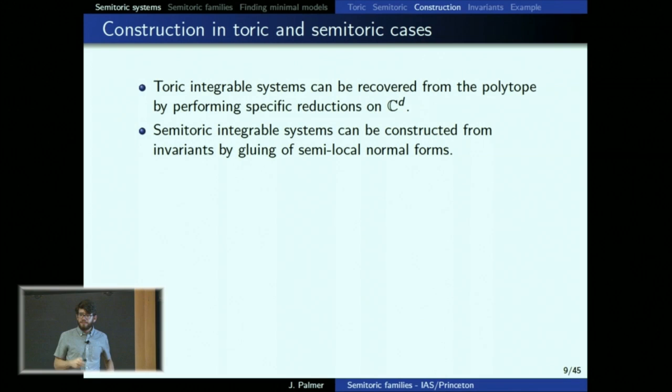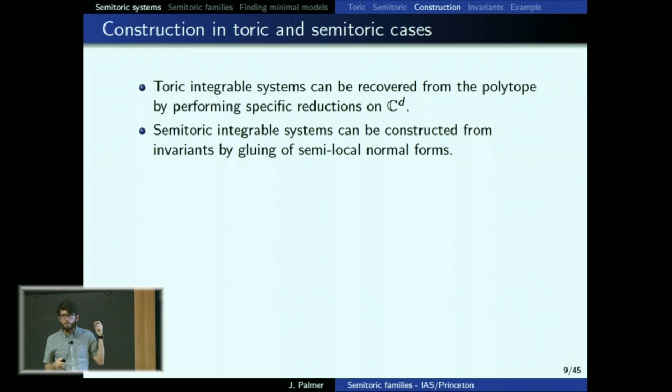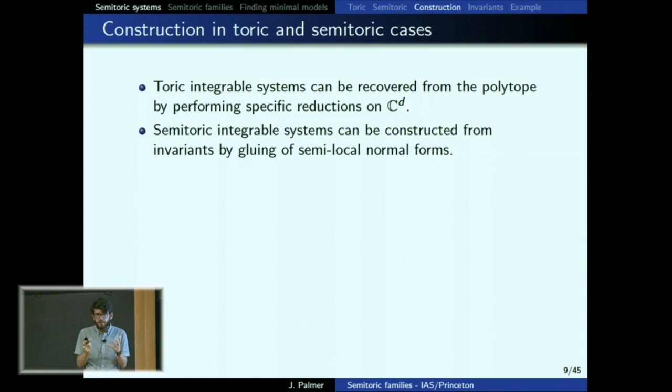Let's compare the toric and semi-toric cases, which leads to the question I'm most interested in for this talk. In the toric case the semi-toric formulation almost recovers it exactly — we have a one-to-one correspondence. But the toric case really tells you how to build these things: if I give you the polygon, you start with C^d and do symplectic reduction by a torus action. It's very explicit. For semi-toric systems, there is a construction in the paper, but it's very local — you build pieces and glue them all together.